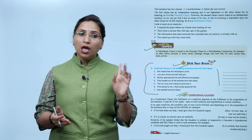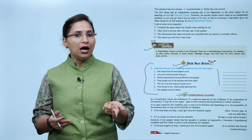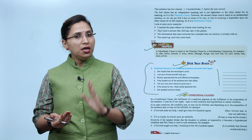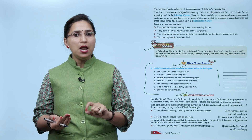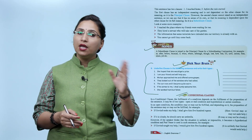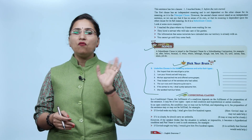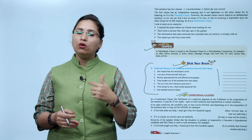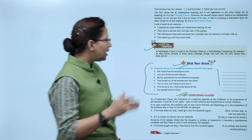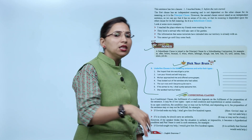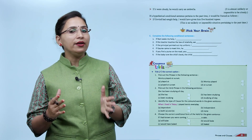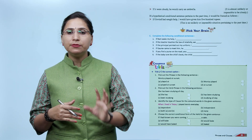Another open condition example: 'If it is cloudy, he should carry an umbrella.' It may or may not be cloudy. However, if the speaker thinks the situation is unlikely or impossible, it becomes a hypothetical condition and the past tense is used. For example: 'If Govind sought my help, I would give him 500 rupees' — it is unlikely that Govind would seek help. 'If it were cloudy, he would carry an umbrella' — it is almost unlikely or impossible to be cloudy.